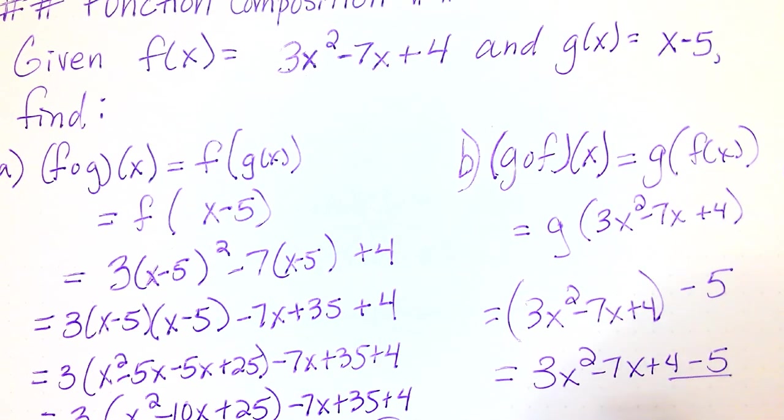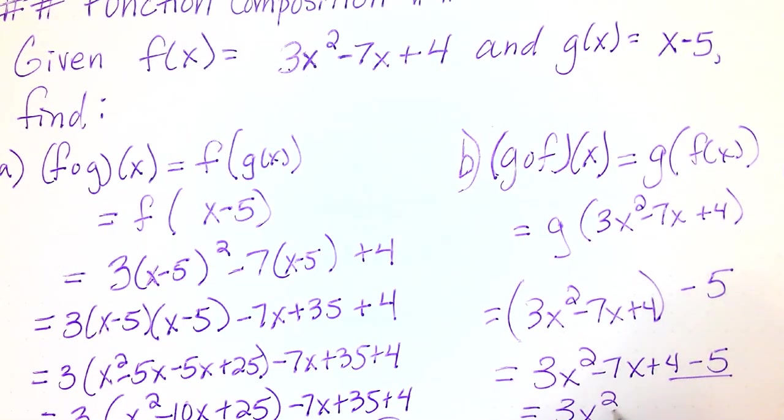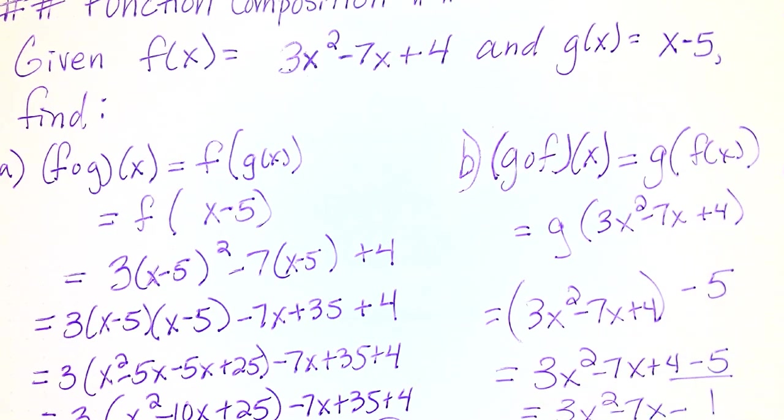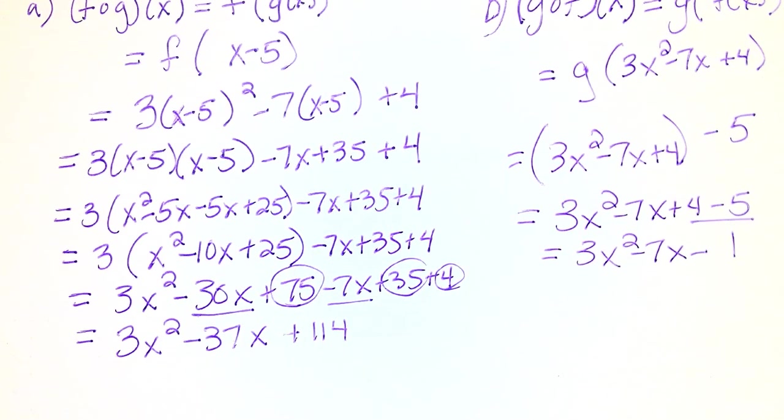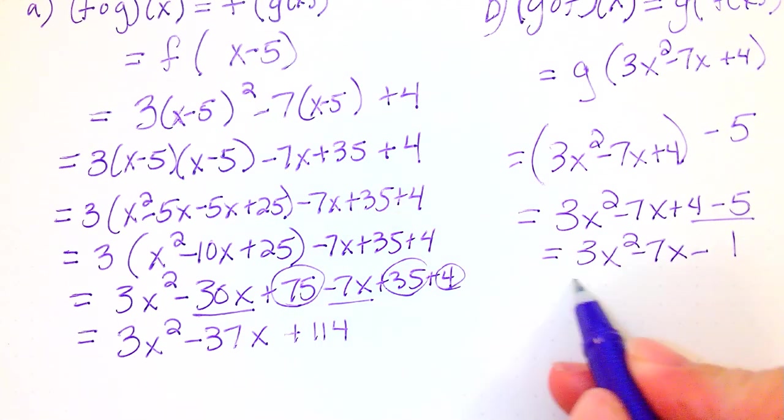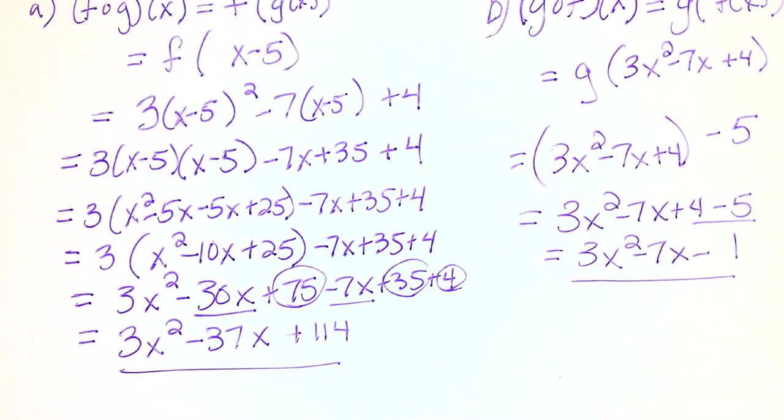And we're going to add these two. So we have 3x squared minus 7x minus 1. That would be our answer for f of g of x and g of f of x.